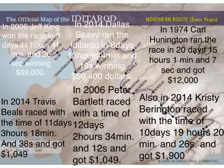Also, in 2014, Christy Barrington raced with a time of 10 days, 19 hours, 20 minutes, and 26 seconds, and got $1,900.